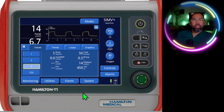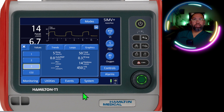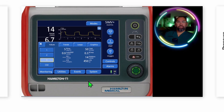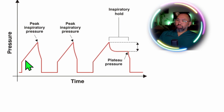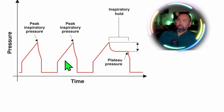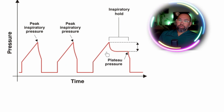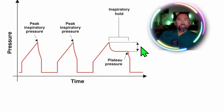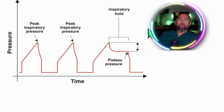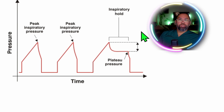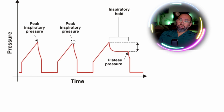Some of you might be saying you need to do an inspiratory hold first before you get a plateau pressure — and you're right. So here we have a pressure scalar, pressure over time, with a couple of pressure waveforms and a couple of mandatory volume control breaths. This breath here, we've performed an inspiratory hold. The reason you need an inspiratory hold is that any time there's gas flowing through the system — the system being ventilator, tubing, tracheal tube, airways — that flow of gas exerts a force, and that force exerts a pressure on the system. The pressure on the system is your peak inspiratory pressure.